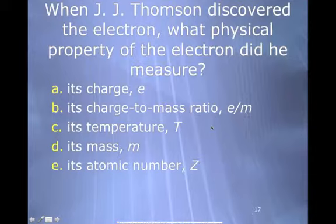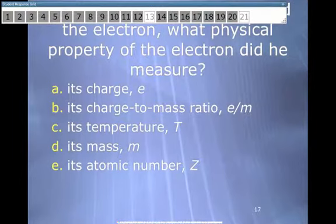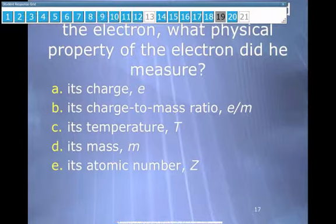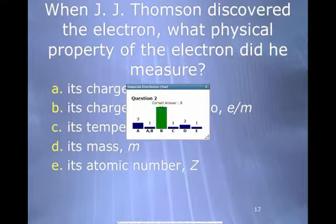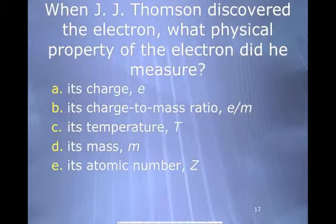When J.J. Thompson discovered the electron, what physical property of the electron did he measure? We just said it. It is B, charge-to-mass ratio.